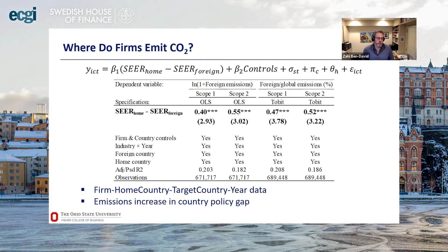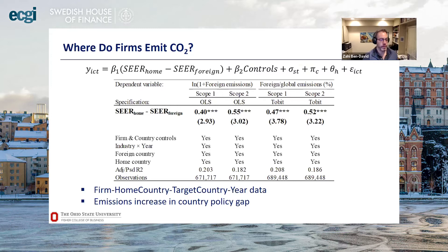Taking advantage of the fact that we see where firms emit, we ask: do you emit more abroad when the policy gap is bigger? We find that firms are more likely to emit in foreign countries when the gap — the policy gap between the home and the foreign country — is larger.